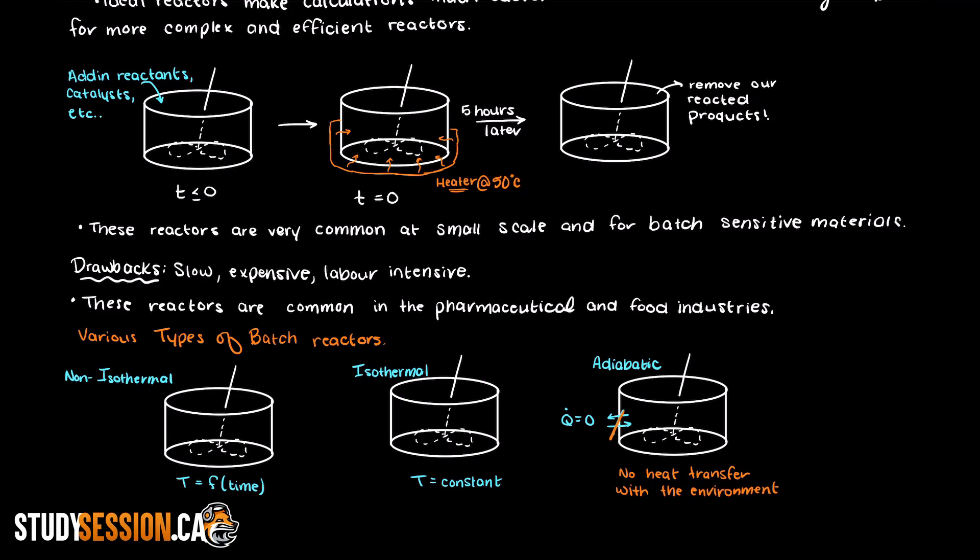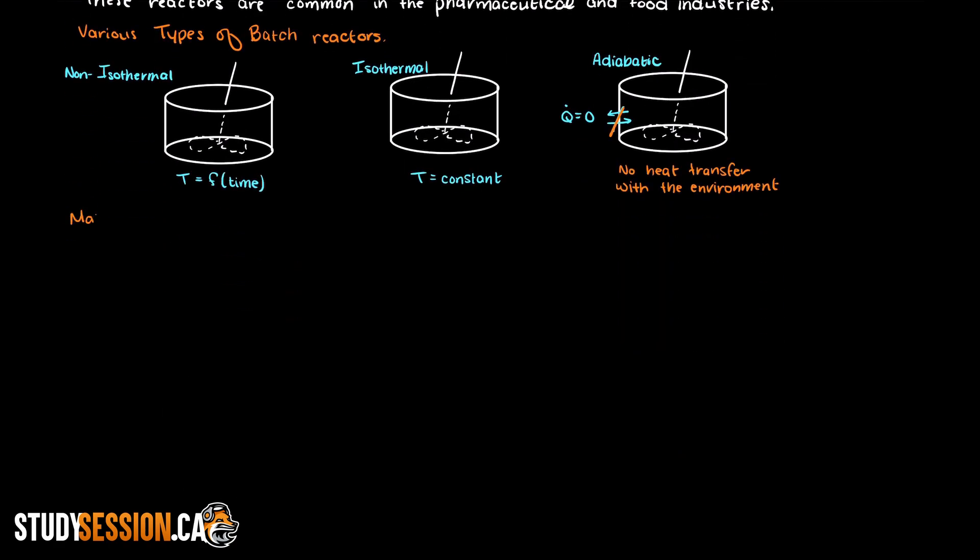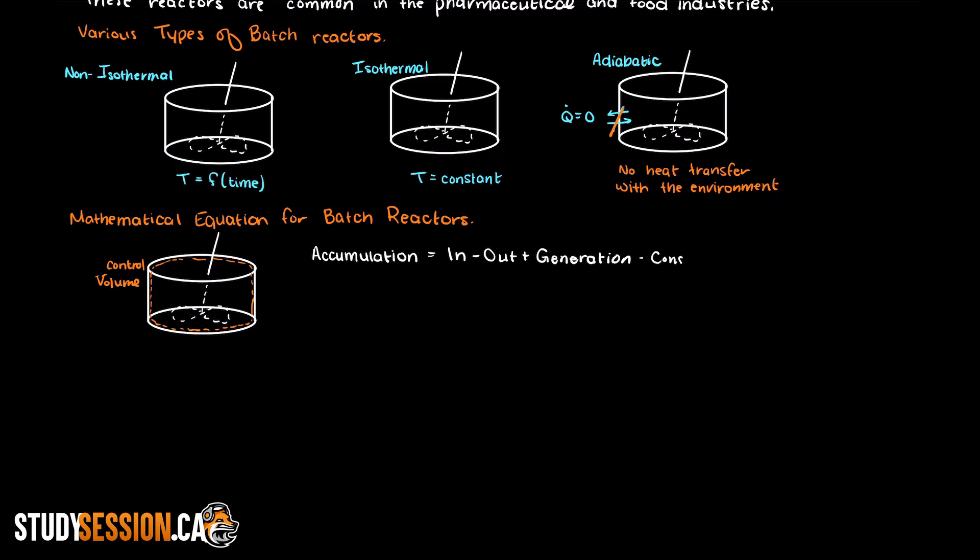So let's talk about the mathematical equations we are going to use to define batch reactors. Let's create a mole balance for some generic component inside of our batch reactor. We'll begin with the general mole balance that was developed last video. Now, all we need to do is eliminate terms that are not applicable to this batch reactor.